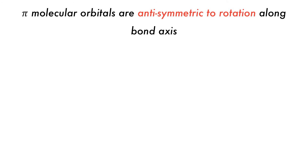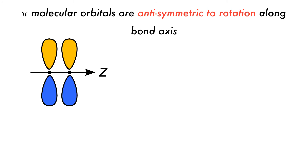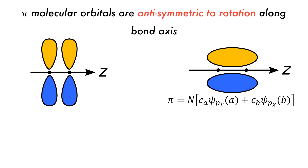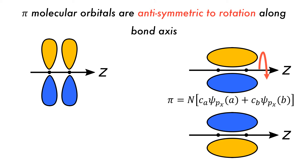How about pi orbitals? Pi molecular orbitals have a change of sign when rotated about the bonding axis. If there are two in-phase p orbitals perpendicular to the bonding axis, they will overlap to form a pi bonding molecular orbital. If these orbitals are then rotated around the z bonding axis, they will change sign, confirming that they are pi orbitals as the yellow and blue regions interchange.